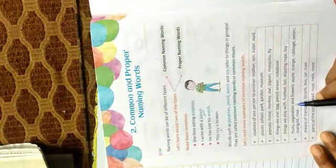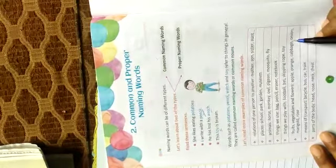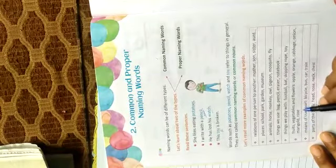Fruits, vegetables and flowers: apple, orange, cabbage, onion, marigold, rose.